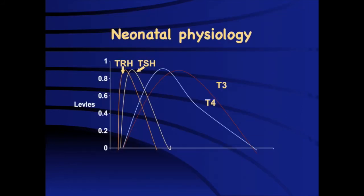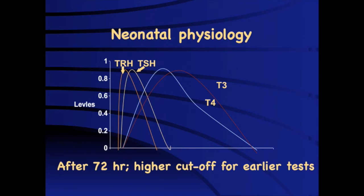Understanding neonatal thyroid physiology is extremely important. As soon as the child is born, due to cold stress, there is a surge of TRH which results in a rapid rise of TSH that gradually comes down over a period of around one to two weeks. Therefore, when assessing a neonate, we should use cut-offs only after 72 hours of delivery, as that is when thyroid function has stabilized to a certain extent. In situations of early discharge, different cut-offs from the 72-hour standard should be applied.